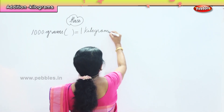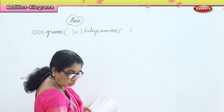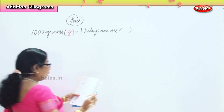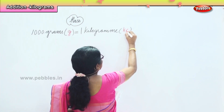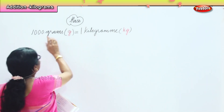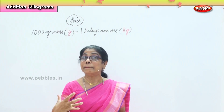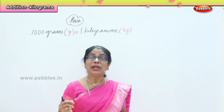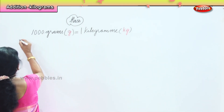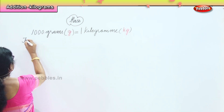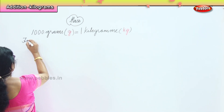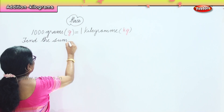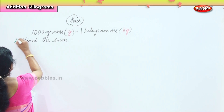The short form of gram is g. All that we need to remember is 1000 grams equal to 1 kilogram. When we are talking about the mass or weight of an object, we measure in kilograms and grams. Now we're going to find some sums. When you say find the sum, we are talking about addition.